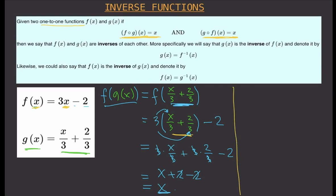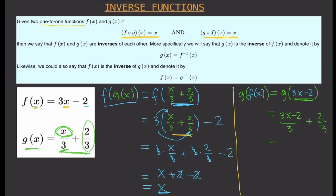Let's evaluate g(f(x)). Our f(x) = 3x − 2, so g(f(x)) means we substitute 3x − 2 into g. That gives us (3x − 2)/3 + 2/3. We distribute the denominator: 3x/3 − 2/3 + 2/3. The 3s cancel, and −2/3 + 2/3 cancels out, leaving us with x.